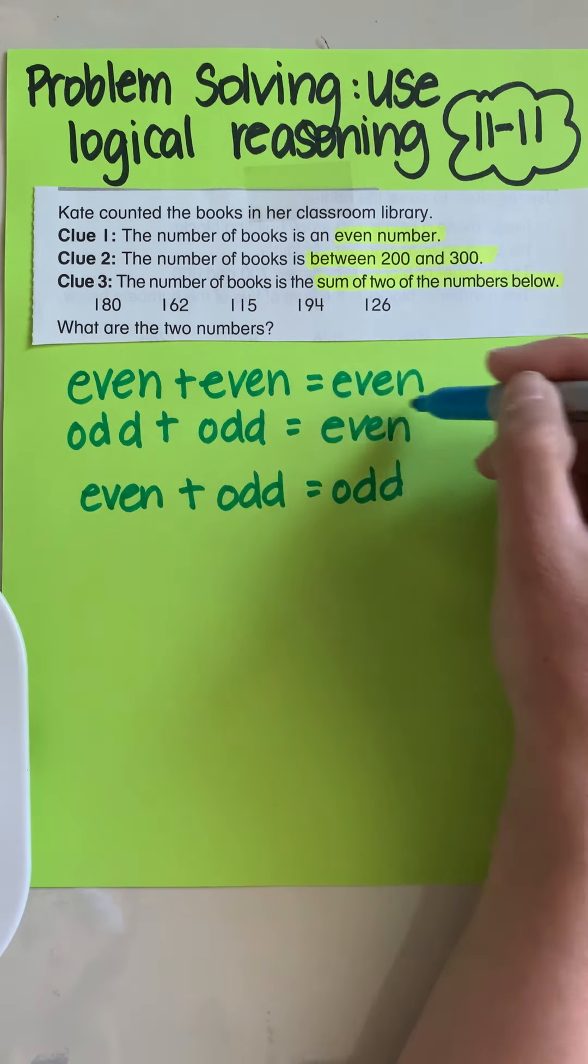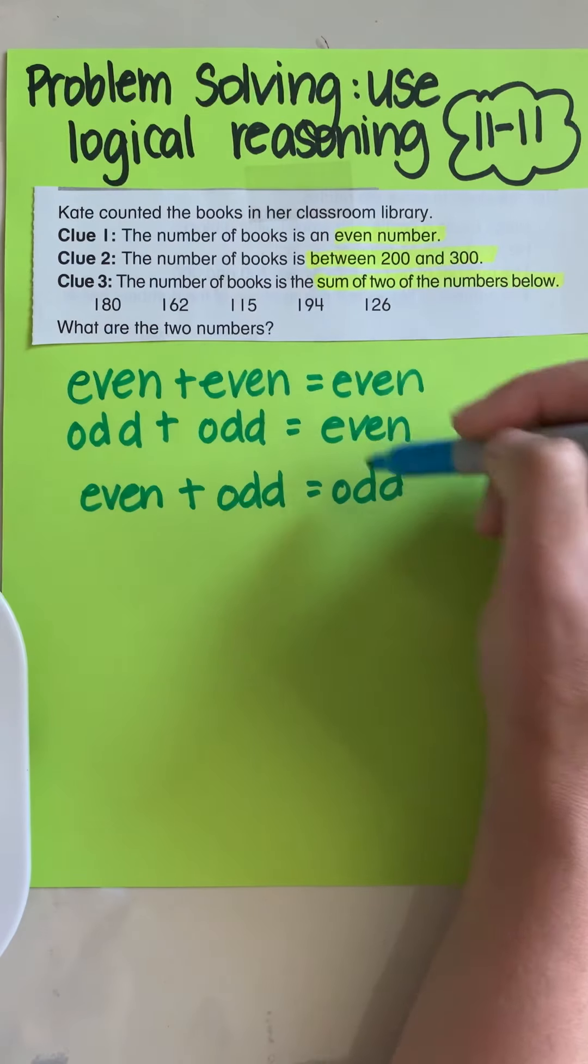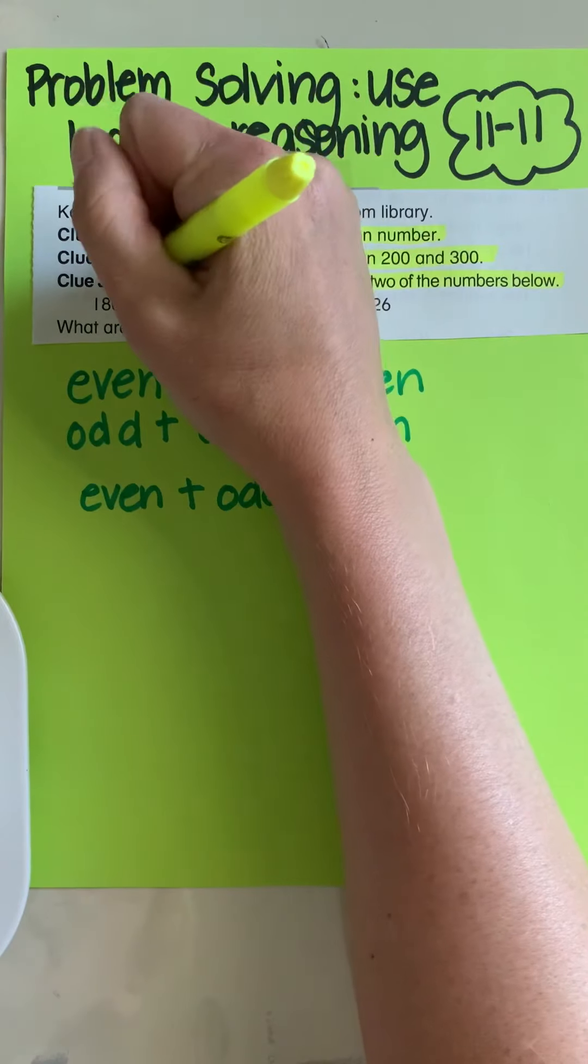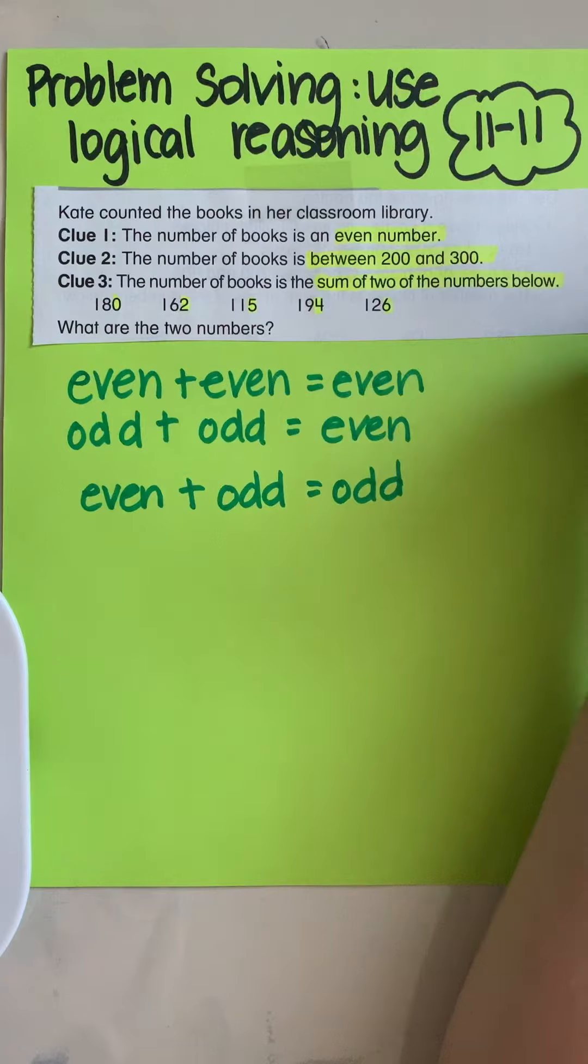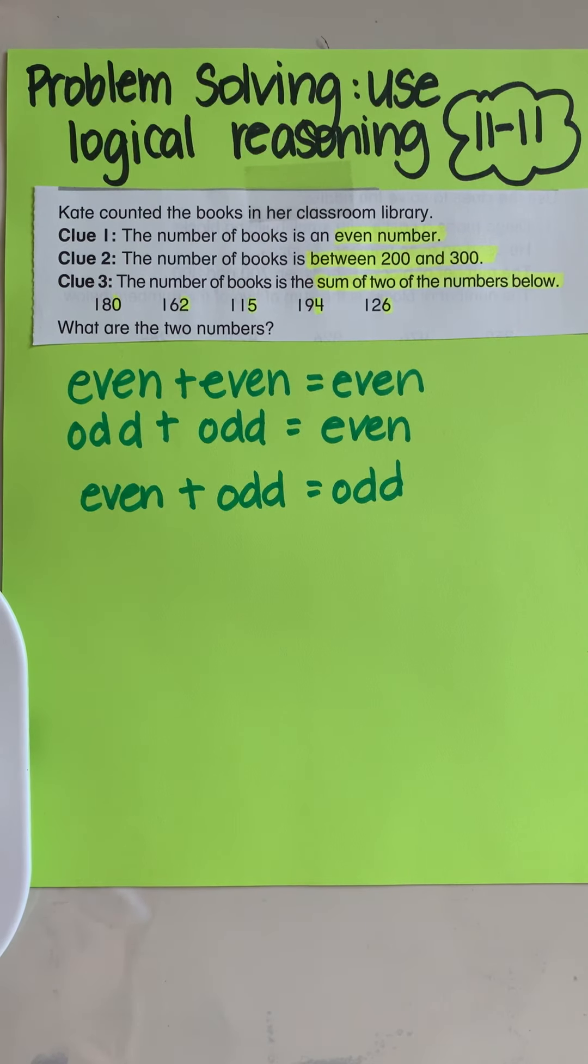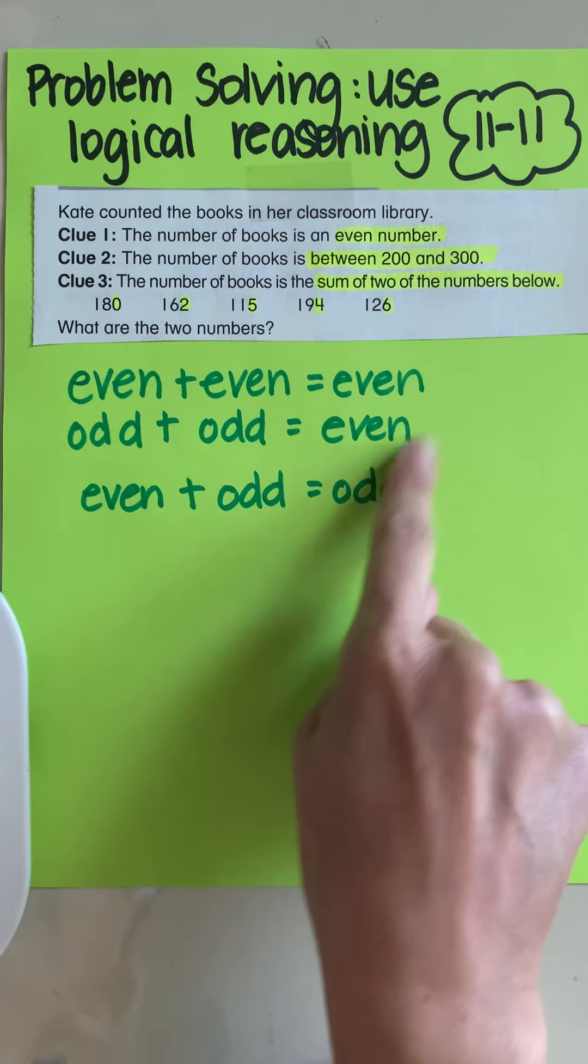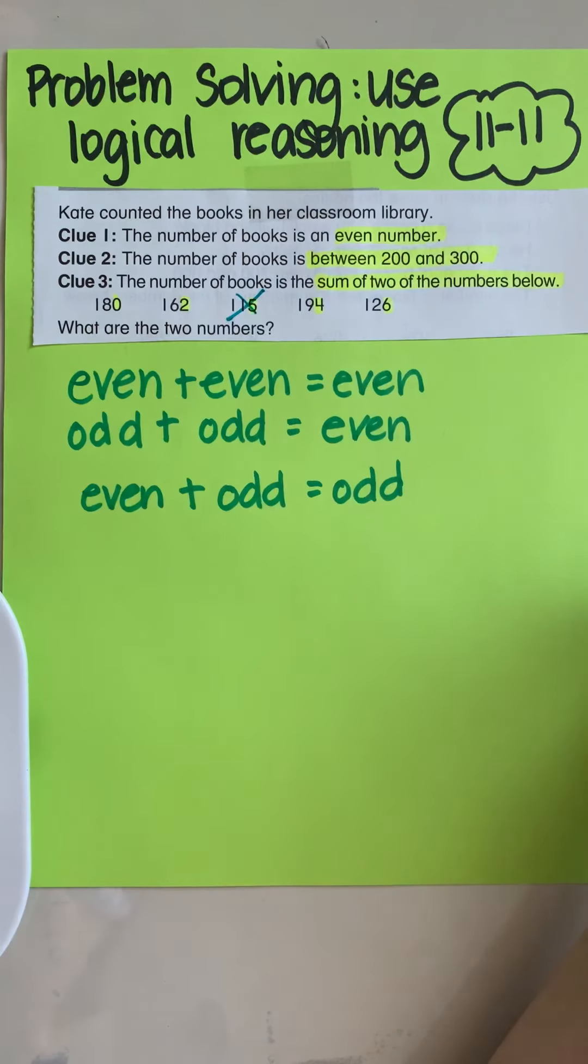I'm going to take a look up here. So I have 180. Let's look at my ones digit. Zero, two, five, four, six. Aha. I see that there is an odd number, but all the rest of these are even. I know if I add an even plus odd, it's going to be an odd, which automatically tells me one of these numbers absolutely cannot be 115.